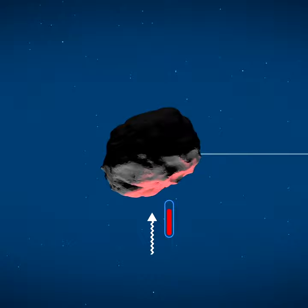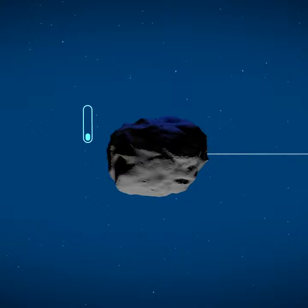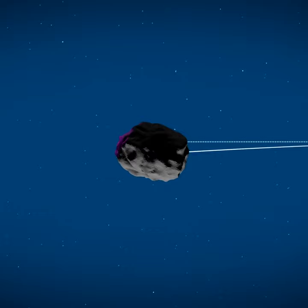During the night, however, the surface cools down, emitting the heat it absorbed as radiation. This radiation exerts a force on the asteroid, acting as a sort of mini-thruster that can slowly change the asteroid's direction over time.